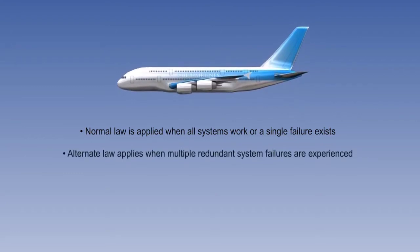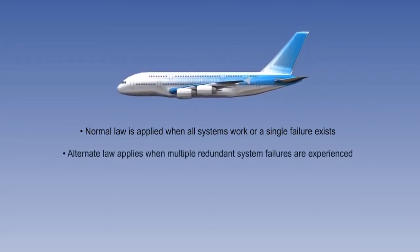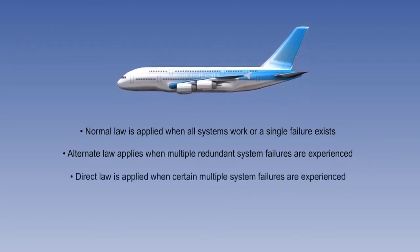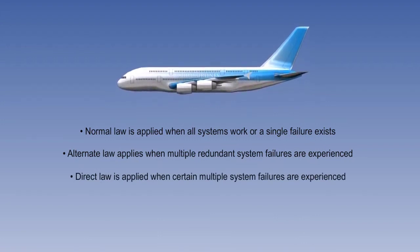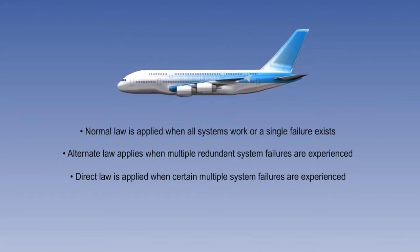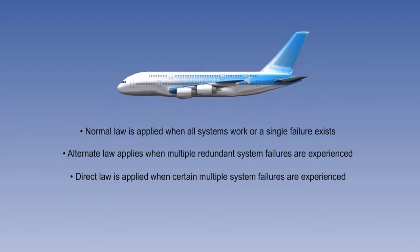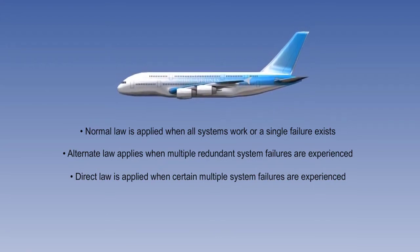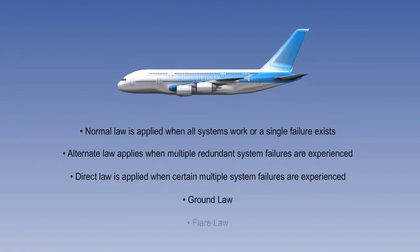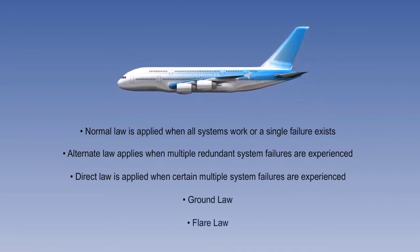Alternate law applies when multiple failures of redundant systems are experienced. Direct law is applied when certain multiple failures are experienced. With an autopilot engaged in a traditional airplane, similar flight envelope protections are provided. There are two further occasions when normal law is not applied and these are during ground operation and flare mode when the normal pitch laws would be unsuitable for safe and instinctive pilot operation.